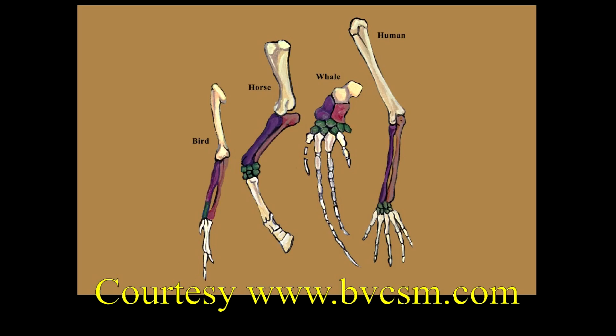For example, we are pointed to the homology of bird, horse, whale and human limb bones being similar, and thus allegedly evidence of evolution.